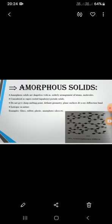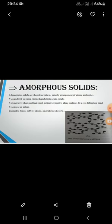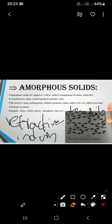Amorphous solids do not give a sharp melting point — unlike crystalline solids, they sometimes act as liquids and become sticky when heated. They are isotropic in nature, meaning properties like refractive index, density, and surface tension have the same values in all directions. Because these values are the same, we say amorphous solids are isotropic.